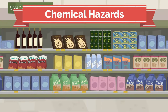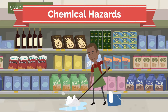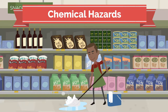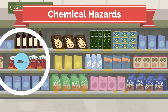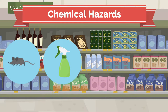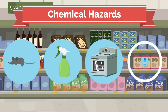Chemical hazards are caused by chemicals that might come in solid, liquid, or gas form and may be hazardous through direct contact or inhalation. Some examples include pest control substances, cleaning agents, oven cleaners, and bleach.